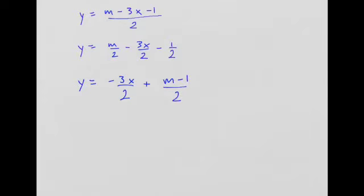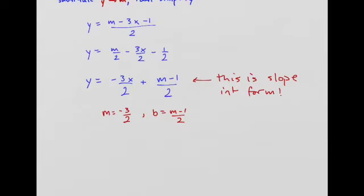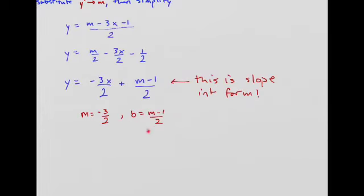Remember, m is just some number, and in fact it's actually negative 3 over 2. So we can actually find b as well. This is slope-intercept form, so we can just see m is negative 3 over 2. Bam, easy. b is m minus 1 divided by 2. So what I'm going to do next is I'll take b and I'll substitute m because I already know what m is.